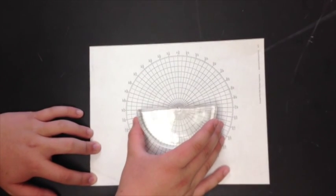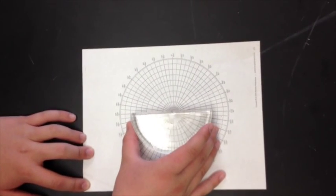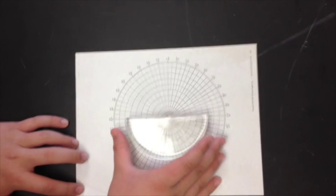So we put the tank so that the center of the tank is at the origin of the polar graph paper.